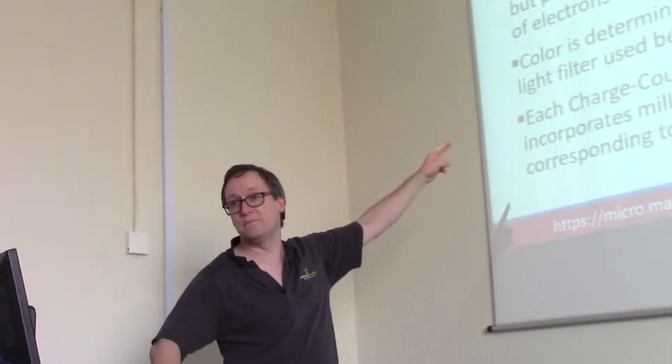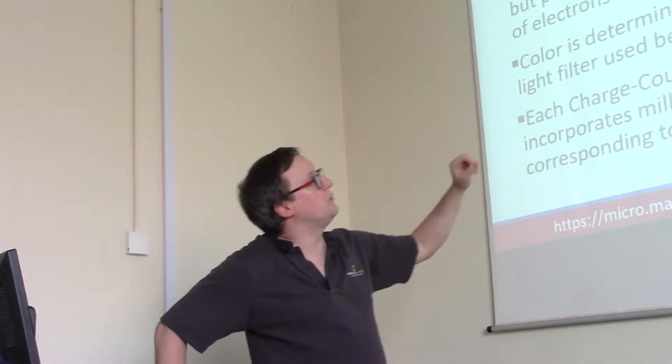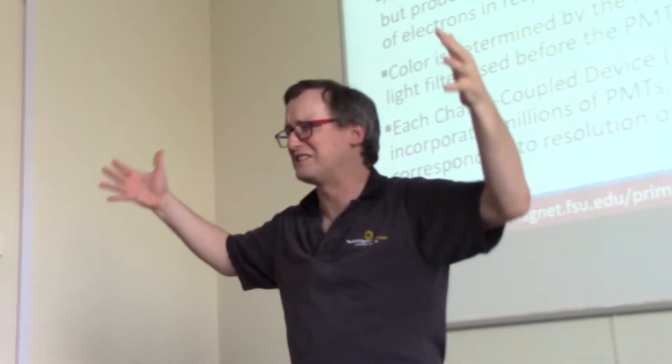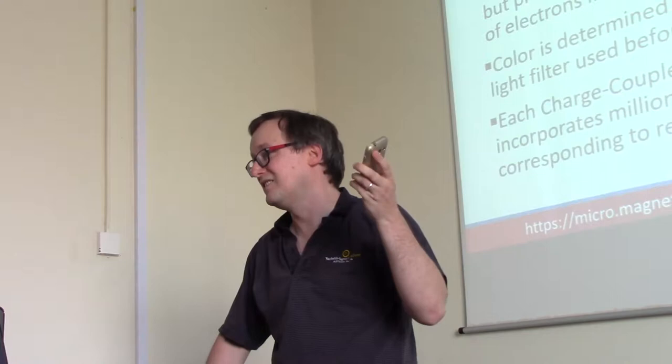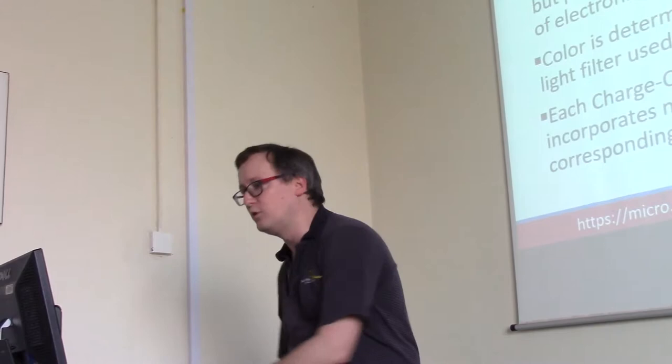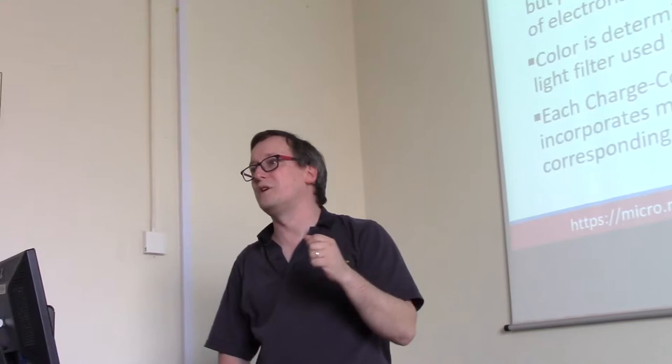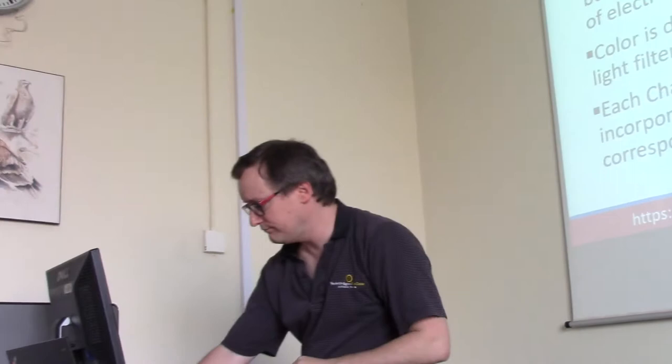The color that a PMT sees depends on the filter applied to its inlet. Photomultipliers don't have to be large — in our cell phones we have CCDs, charge-coupled devices, that incorporate millions of these. If you have a 10 megapixel camera in your phone, you have 10 million of these packed together. So you can make a photomultiplier very small and very sensitive.